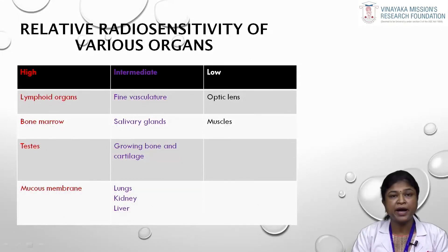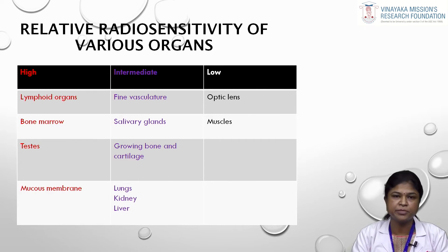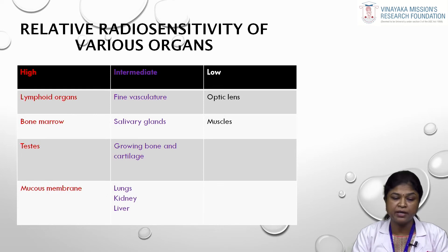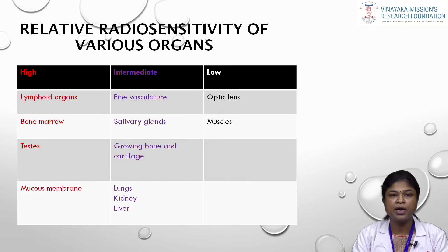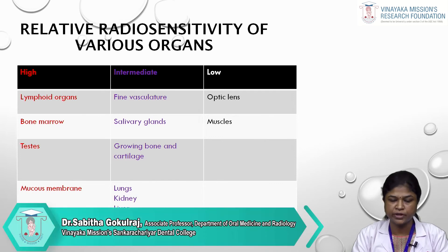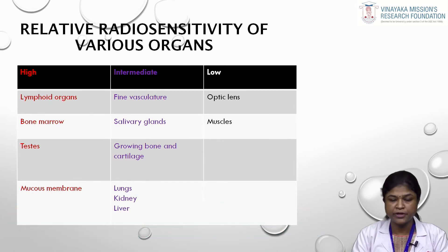Cells are categorized as having high, intermediate, or low radiosensitivity. Lymphoid organs, bone marrow, testis, and mucous membranes have high radiosensitivity. Fine vasculature, salivary glands, growing bone and cartilage, lung, kidney, and liver have intermediate radiosensitivity. Muscles and optic glands have low radiosensitivity. Cells with high radiosensitivity are most prone to deterministic effects.